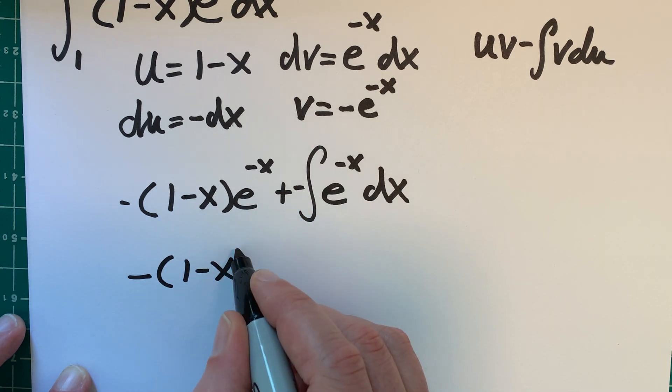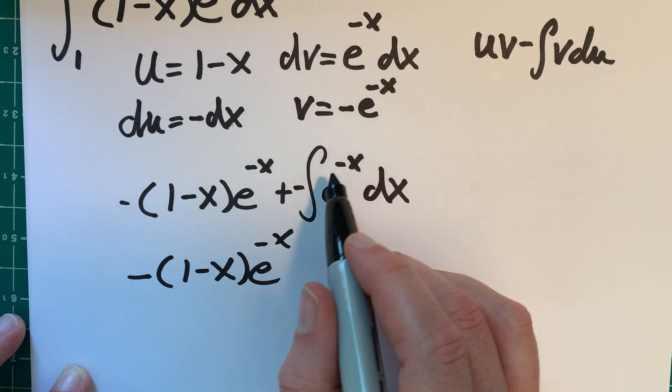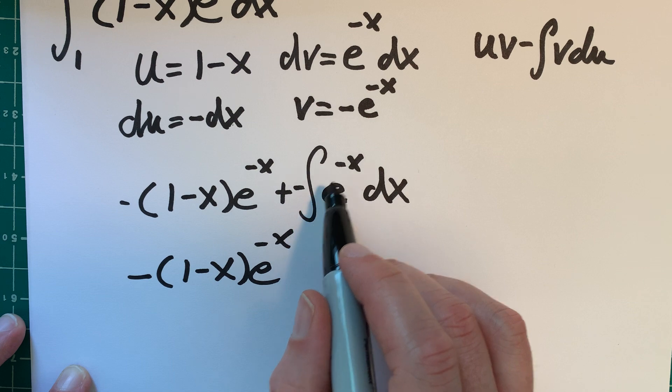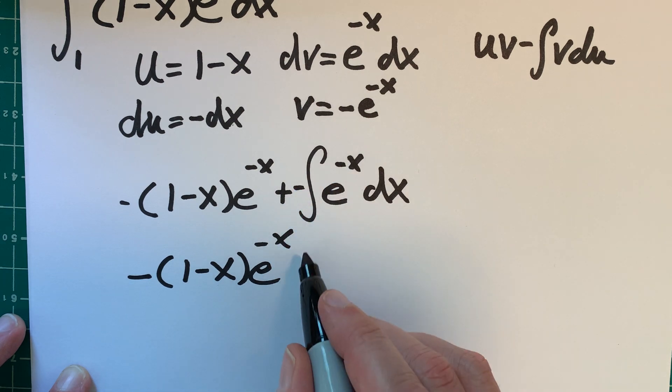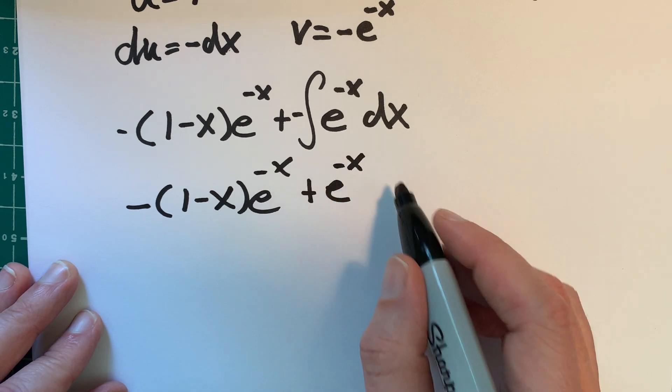So 1 minus x, e to the negative x. So like I say, if we brought a negative 1 down here, and you took the derivative, it would become positive. So I just think it would be positive e to the negative x.